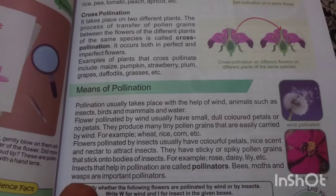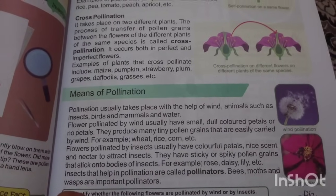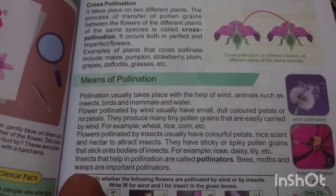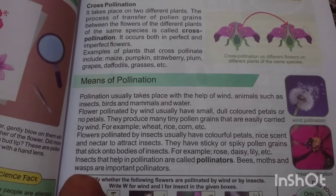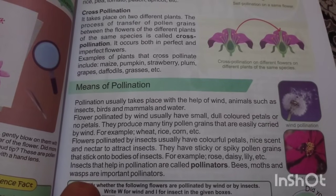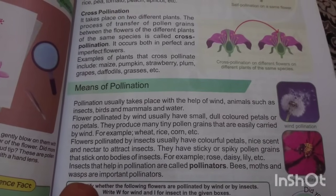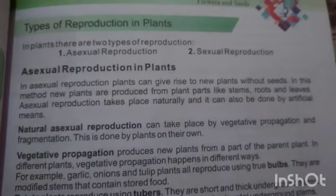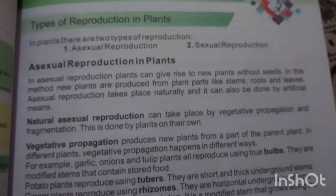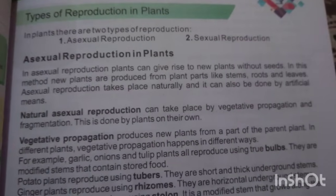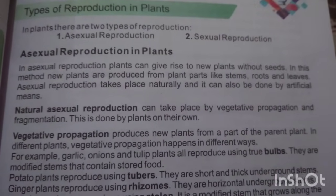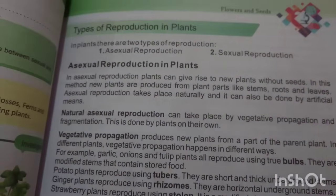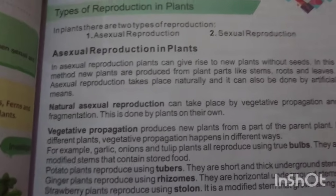For example, the Australian Acacia. Insects that have been involved in pollination are called pollinators. Bees, moths, and butterflies are important pollinators. Now we will discuss the topic of types of reproduction in plants: asexual reproduction and sexual reproduction.